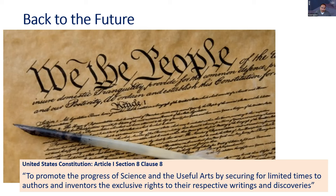With that as background, let's jump into the nuts and bolts. Here's the definition: copyright subsists — that is to say, it exists — in any original work of authorship fixed in a tangible medium of expression. I'm going to argue this is an equation with three elements: if something is original, if it's a work of authorship, and if it's fixed in a tangible medium, then it's a copyright. If you ever wonder whether something is a copyright, ask yourself: does it fit the equation?